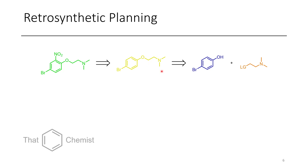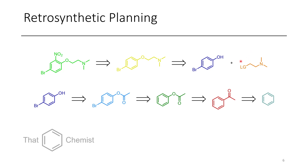If we wanted to install this ether linkage we could probably do that from a phenol and an amine with a leaving group. Now if we have that phenol, we could probably access it via an ester, which could have been the precursor before this was brominated — going back to the CH analog. Finally, this acetate could be made by a Baeyer-Villiger type oxidation.